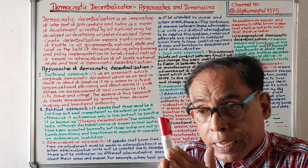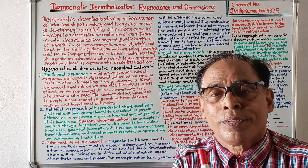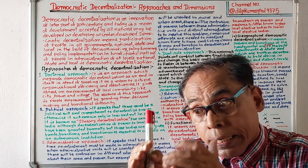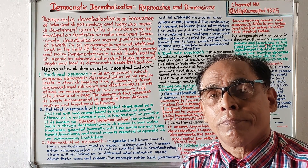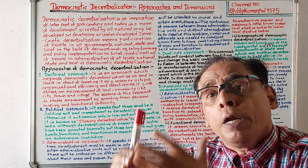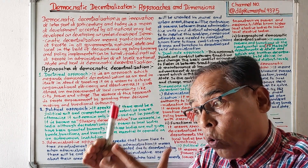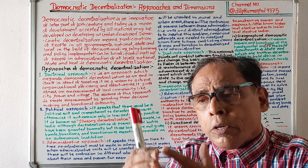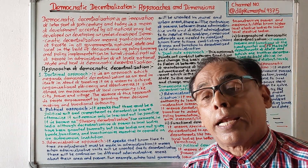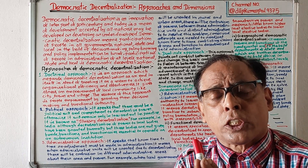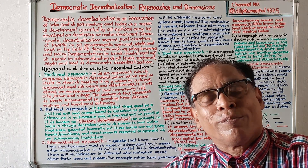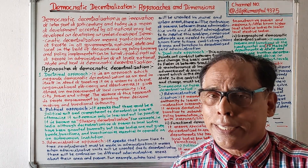Political approach of democratic decentralization speaks that there must be a will, a determination, and a commitment to delegate power to local bodies. If there is no commitment or determination to transfer power from central authority to local authorities, then democratic decentralization will be meaningless — it will be considered illusory decentralization.